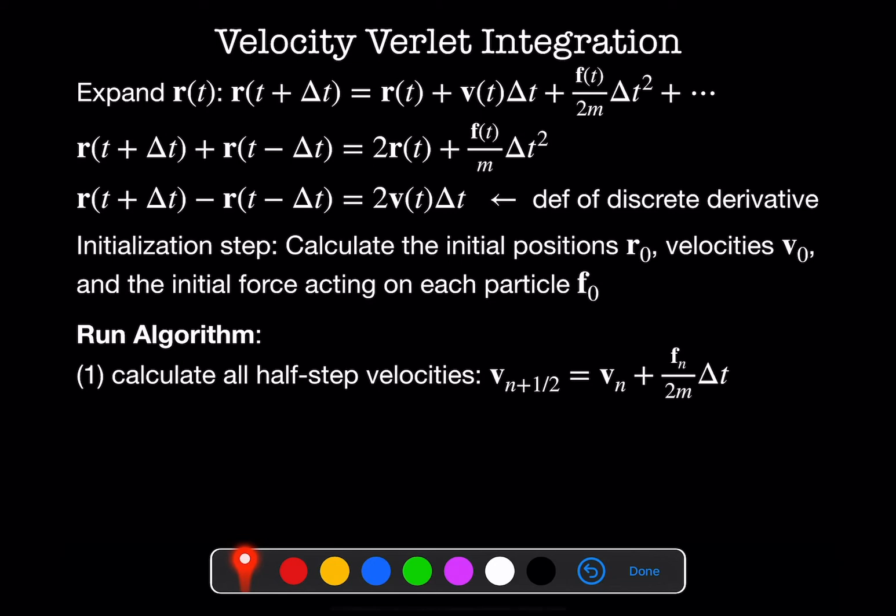So this is the algorithm. Step one is I calculate all of the half step velocities. So I update my velocities as if the force had taken them half of delta t. So that's my first step. The second step is I'm going to update the positions of all of my particles based on this new half step velocity. So I'm going to take my position and add to it the velocity at the half step, not the velocity at r_n, and multiply that by delta t.